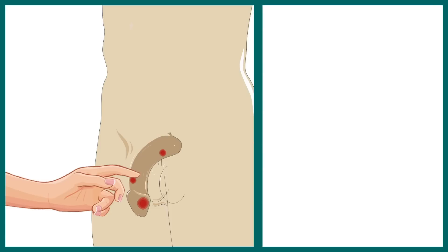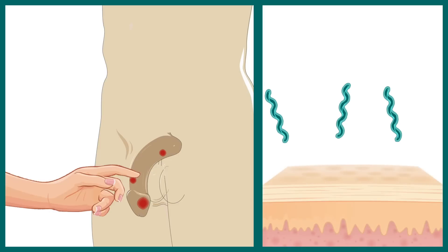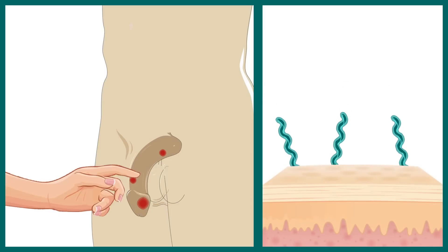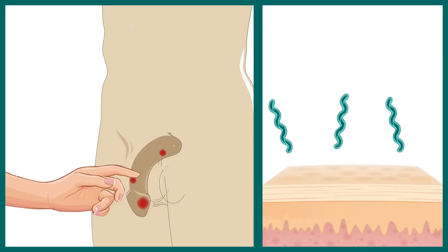For example, if during sex a person touches a penis that has a chancre, some of the syphilis-causing Treponema bacteria can invade through small breaches in the skin and possibly infect that person.